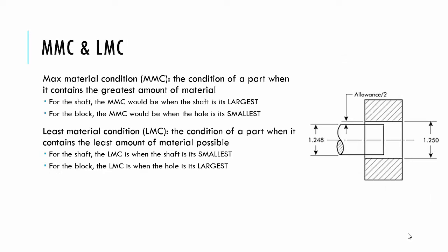Max material condition and least material condition, MMC and LMC. Max material would be when you use the most material. So for something like the shaft, that would be when it's its largest. When would the block that has a hole cut in it be at its max material condition? That would be when the hole was its smallest, because when the hole is the smallest, you'd remove less material.